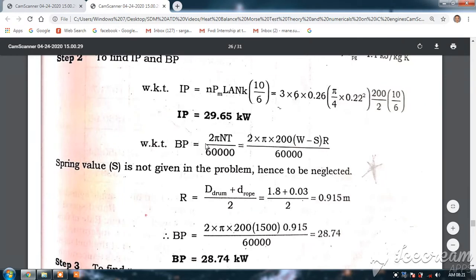Similarly, BP is equal to 2 pi NT divided by 60,000. Here, this T is equal to W minus S into R. Load minus spring reading into effective radius. Spring value is not given, hence it is neglected. So, we will consider R is equal to D drum plus D rope divided by 2.